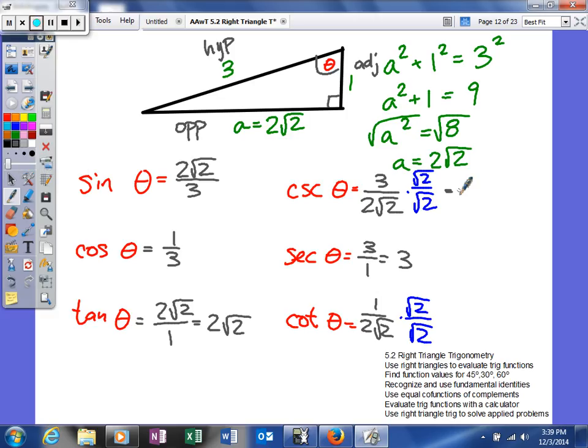So when you multiply the top by the square root of 2, you get 3 square root of 2. When you multiply the bottom, you're gonna get, multiply your coefficients together, so 2 times 1 is 2. And then the square root of 2 times the square root of 2 is gonna be the square root of 4, which is 2. So 2 times 2 will give us 4.